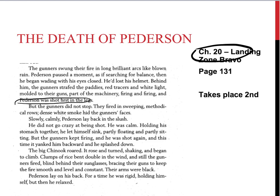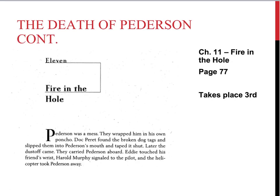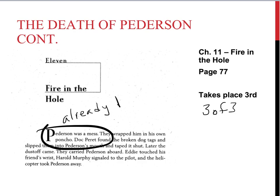The reason we know this chapter is the second in the chronology — two of three — I'm going to show you. In Chapter 11, titled Fire in the Hole, this is the last one, three of three, because it starts off with Pedersen being a mess and that he is already dead. So we know that Chapter 11 happens after Chapter 20 because Pedersen is already dead. They wrapped him in his dog tags, taped his mouth shut, all that different stuff. So we know that this one is three of three.